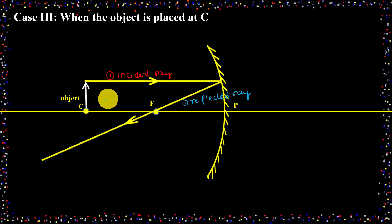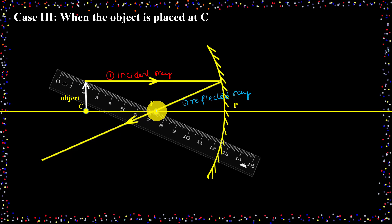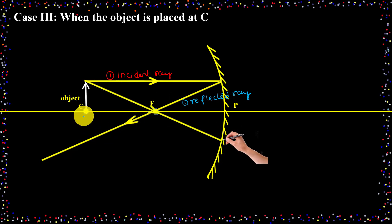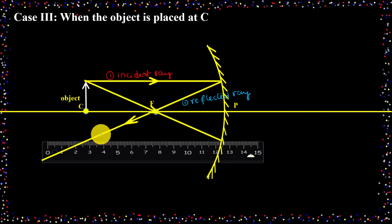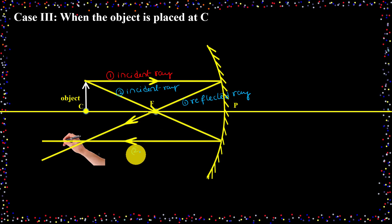We need one more light ray. Rule 2: if the light ray passes through the focus, it will be reflected parallel to the principal axis. I am joining the top of the object and the focus and drawing the incident ray. Since this light ray passes through the focus, the reflected ray will be parallel to the principal axis. This is the second incident ray and the second reflected ray.